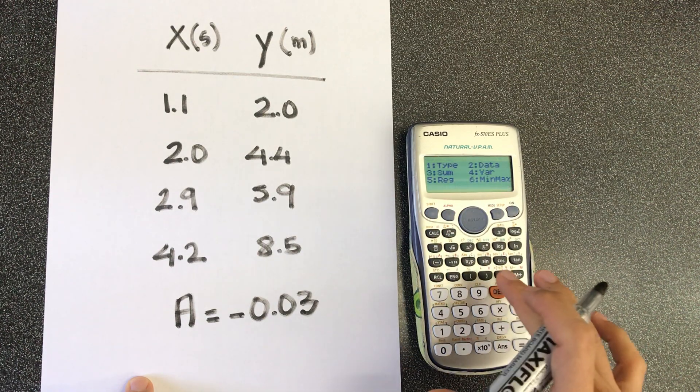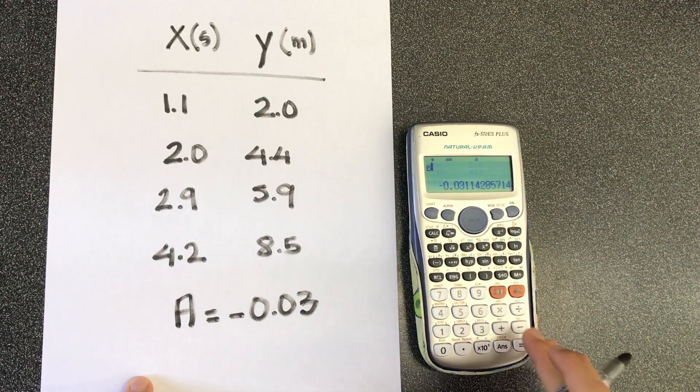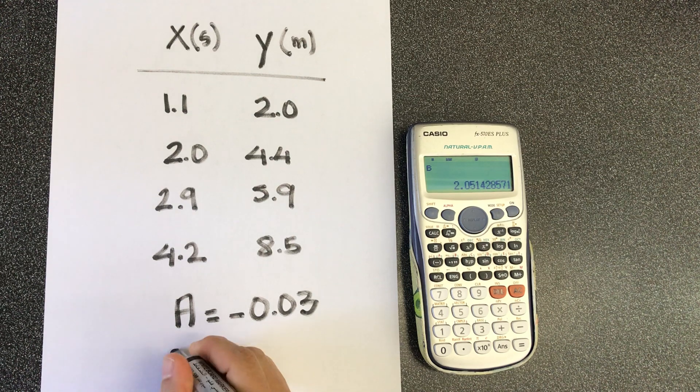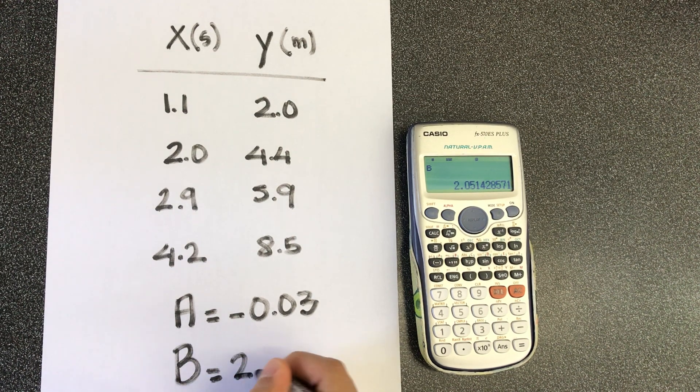And then shift 1 again. Regression, go into b. That is my slope. My slope is going to be 2.05.